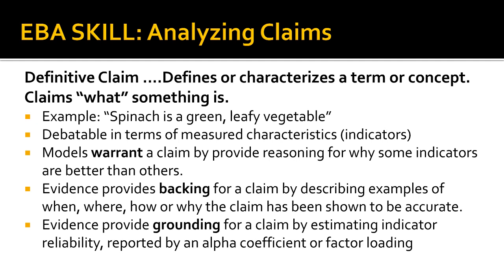Each of these indicators can be measured to determine how spinach-like is a food product that we are holding in our hands. Notice that this simple definitive claim may fail to distinguish spinach from other food, such as lettuce. Imagine surveying a group of people using the indicators provided in the definitive claim — each indicator is a question you would ask when presenting a food product to them. For example: is this produce item green?